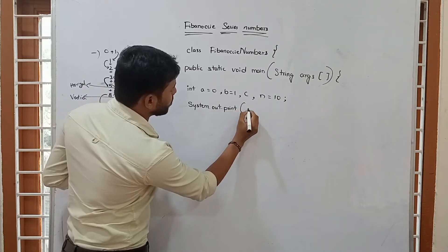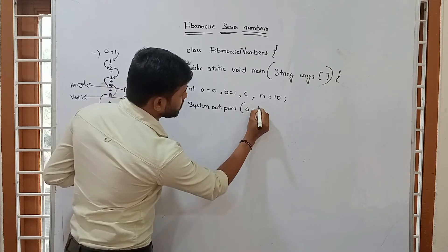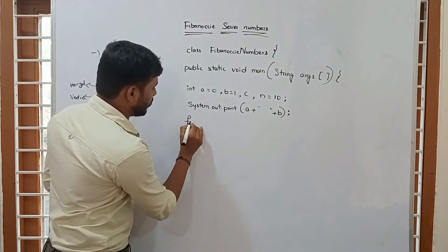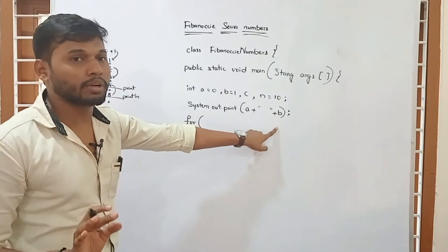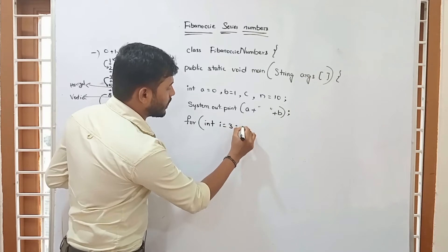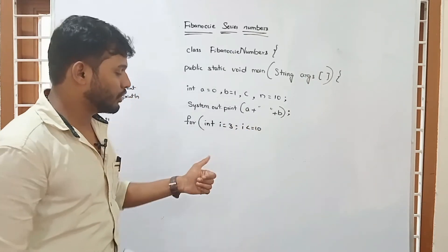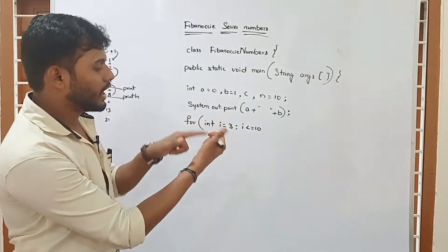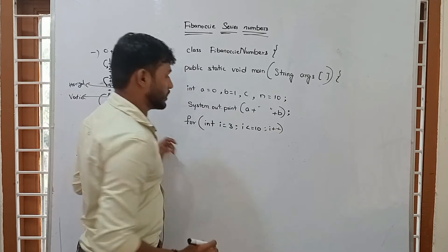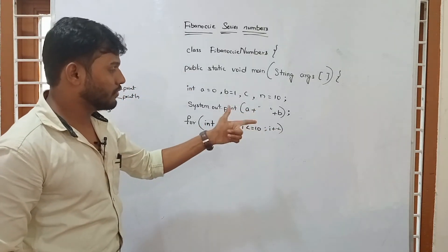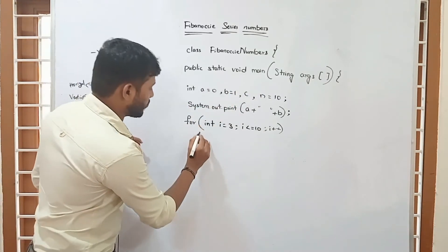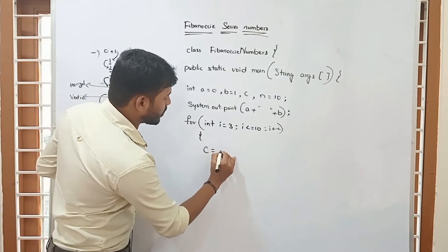Here I am using System.out.print to print A plus space plus B, which will output 0 and 1. Already two numbers have been printed. Now the loop runs from i equal to 3, while i is less than or equal to 10, so this loop will be executed for i equals 3, 4, 5, 6, 7, 8, 9, and 10 — that is 8 times — because we already printed the first 2 numbers.